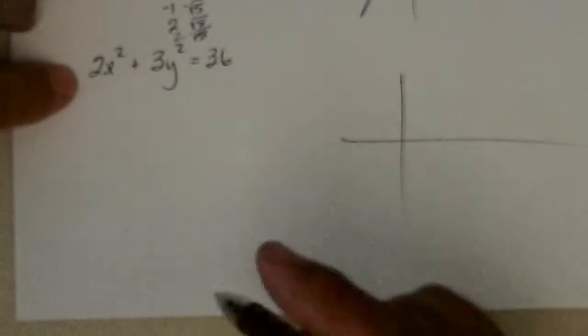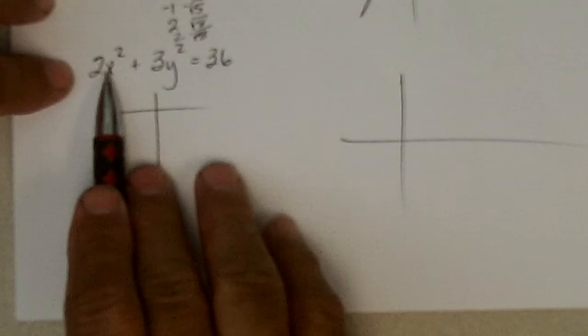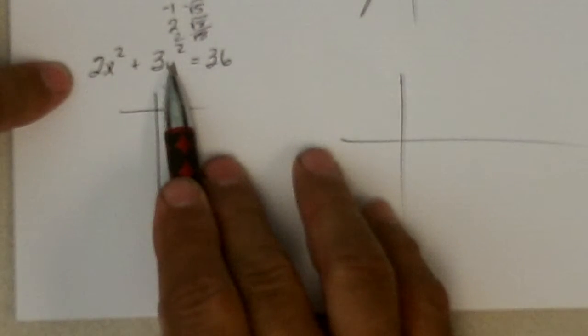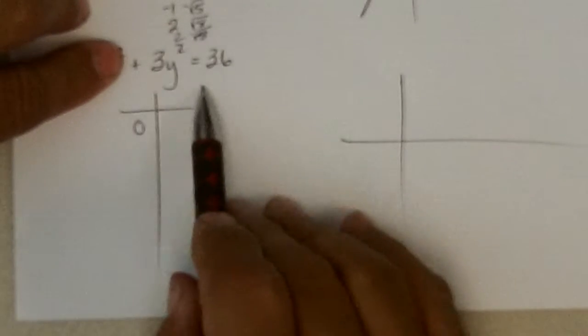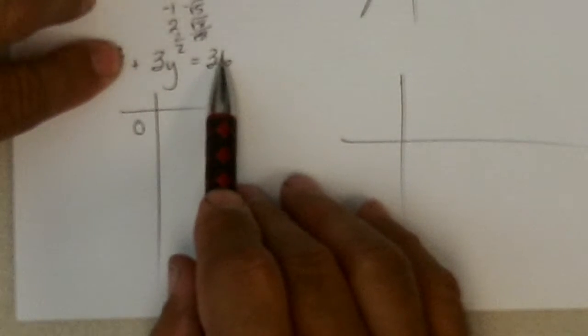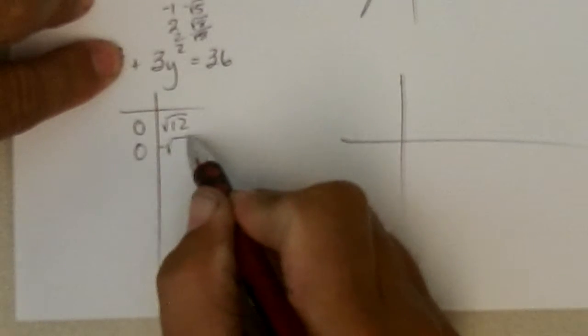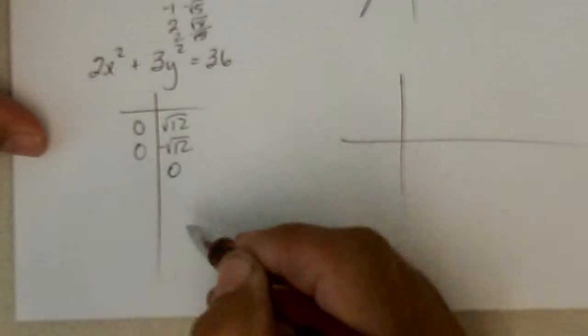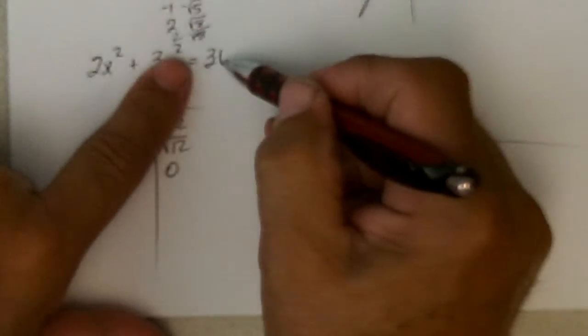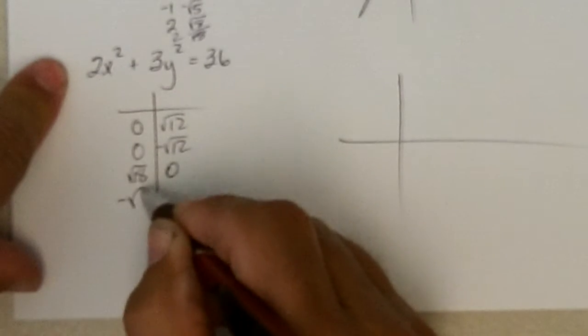Okay. This one. All right. It looks like it's going to be symmetric with the y-axis, symmetric with the x-axis. But, let's just go ahead and find intercepts. If I make x be 0, 3 goes into 36, 12 times. So, it would be the square root of 12 and negative square root of 12. If I put 0 in for the y, I'll divide by 2 and that is 18. So, x would be the square root of 18 or negative square root of 18.